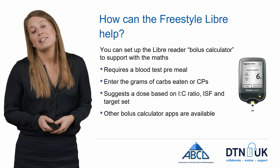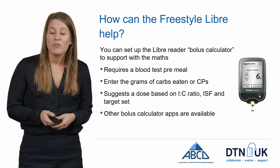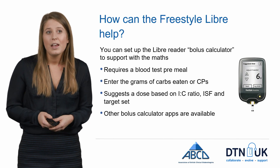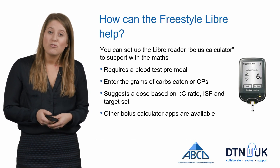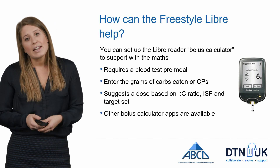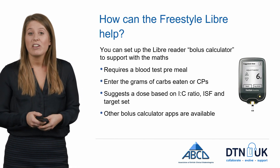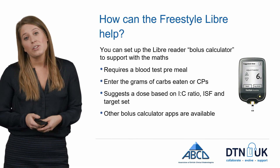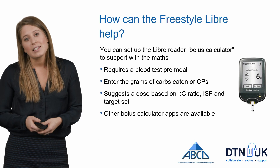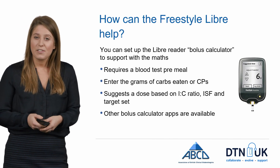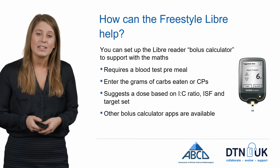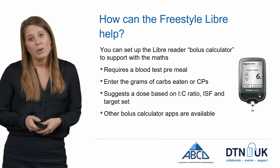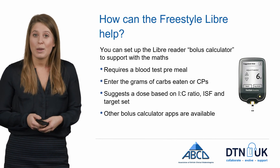The Freestyle Libre can help because you can set up the Libre reader as a bolus calculator to support the maths of carbohydrate counting. This requires a blood test rather than a scan before the meal; you then enter the amount of carbohydrate in grams or carbohydrate portions, and the reader will suggest a dose based on your insulin to carbohydrate ratio, insulin sensitivity factor, and the target you have set. Other bolus calculator apps are also available — speak with your diabetes team to see which ones they would recommend.